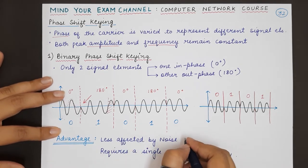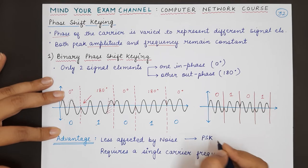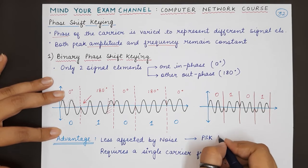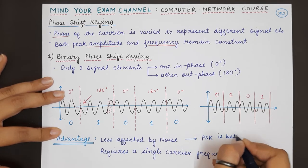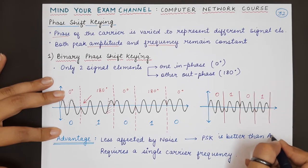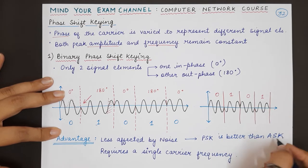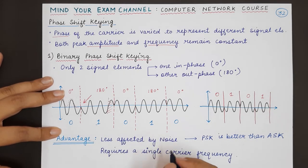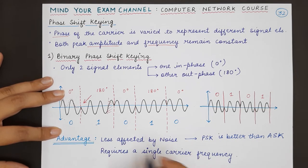In this case, PSK is better than ASK. That is, phase shift keying is better than amplitude shift keying because amplitude shift keying gets easily affected by the noise that is present during transmission.